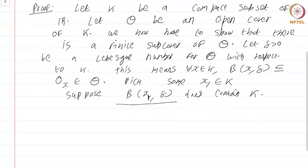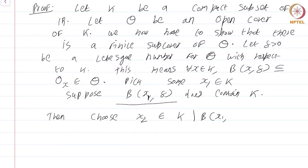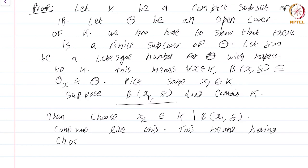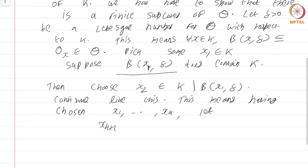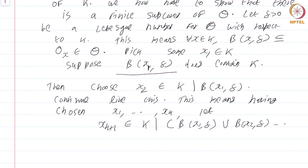Then choose x_2 in K set minus B(x_1, delta) — choose some point of K which is not in B(x_1, delta). Continue like this: having chosen x_1 through x_k, let x_{k+1} be an element of K set minus B(x_1, delta) ∪ B(x_2, delta) ∪ ... ∪ B(x_k, delta).